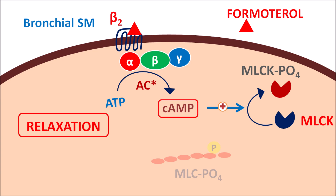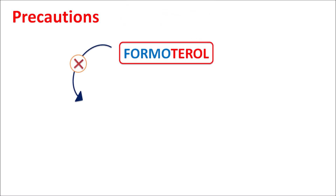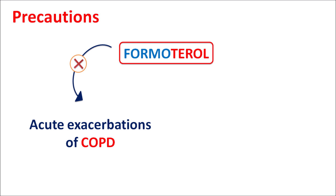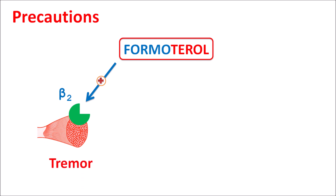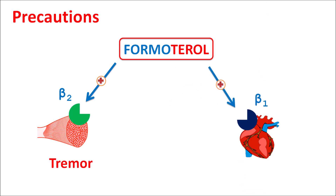One important precaution is that Formoterol should not be given for acute exacerbations of COPD — for acute bronchospasm, Formoterol is not effective and such conditions should be treated by short-acting beta-2 agonists. This drug can stimulate beta-2 receptors on smooth muscle resulting in increased muscle twitching leading to tremor. Even though this drug is more selective towards beta-2 receptors, it can also act on beta-1 receptors, stimulating them on the heart resulting in palpitations, tachycardia, and even chest pain.